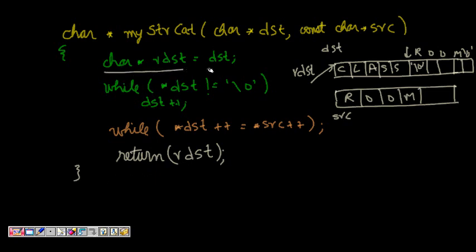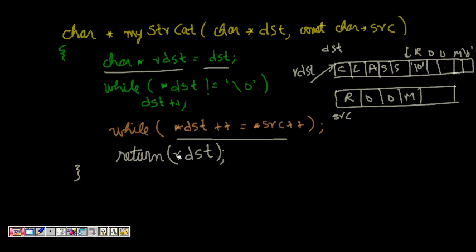We have `char* r_dst = dst`, which is the start of our concatenated string at destination itself. Then, while the character at destination is not equal to the null character, we increment destination until we reach the end '\0'. From there, we copy the source string, and finally the '\0' is also copied. We return `r_dst`.